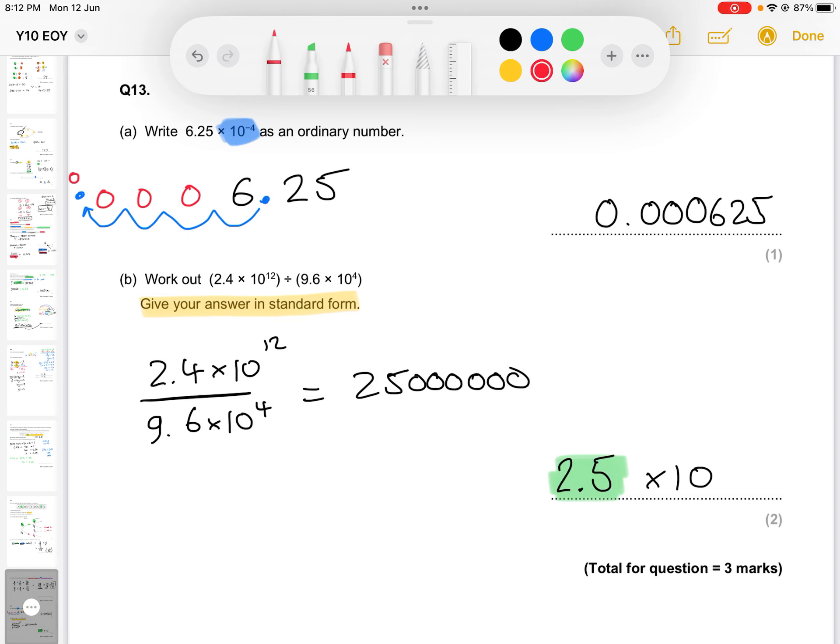So our decimal point, which is here, needs to jump all the way to in between the 2 and the 5. So we have 1, 2, 3, 4, 5, 6, 7 jumps, giving us 2.5 times 10 to the power of 7.